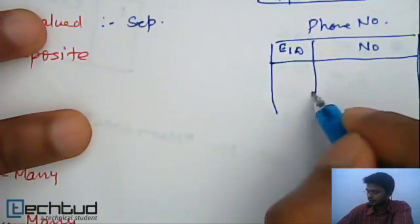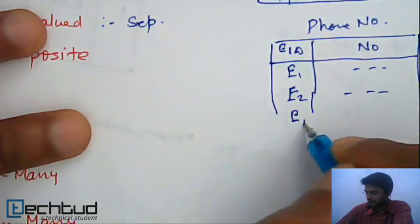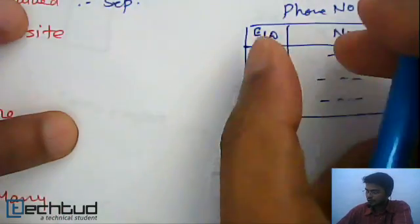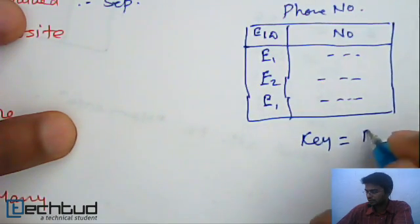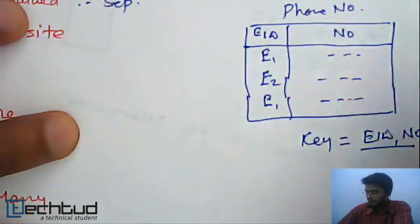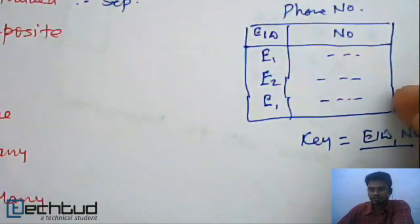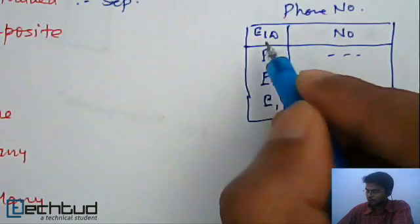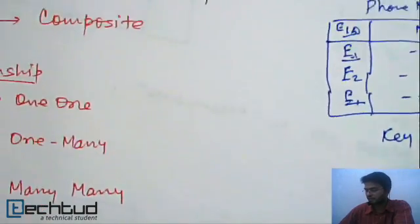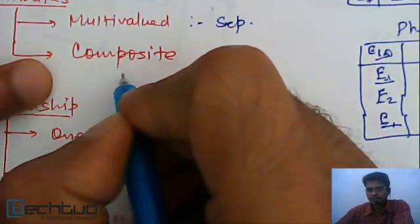In the phone number table, we store the number and an employee ID. For example, E1 may have multiple numbers and E2 may have a number. The candidate key is the combination of the employee ID (EID) and the number. Using EID, you can find all contact records for a given employee.